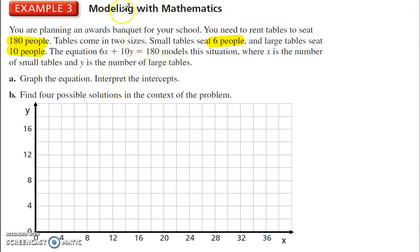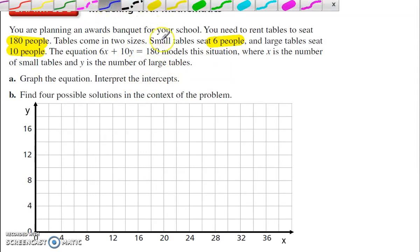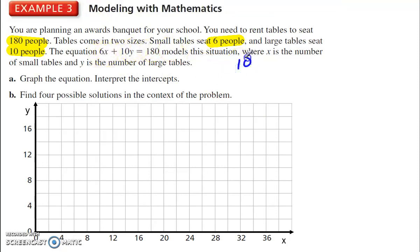Interpret the intercepts. So, let's start by finding the intercepts. That means make the other one 0. So, if I make the other one 0, it's going to drop away. If I make this 0, then I get 10y equals 180. Divide by 10, y equals 18. If I drop off the 10y by making that 0, I get 6x is equal to 180. Divide by 6 on each side, and x is equal to 30.